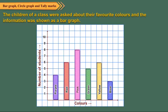The bar for the pink color is tallest. It means pink color is liked by most of the students. Also the bar for blue color is shortest. So blue color is liked by least number of students. The bars for red and yellow colors are of equal height. So these two colors are liked by equal number of students.